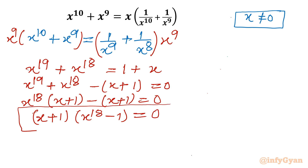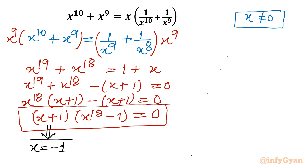We have factored the equation and can see we will calculate 19 solutions overall. The first real solution is easily seen: x = -1.